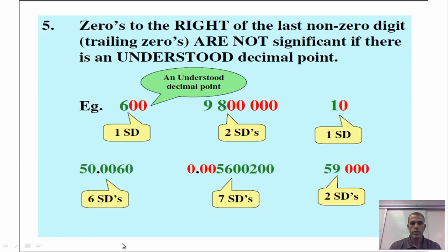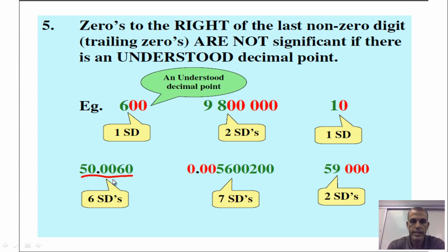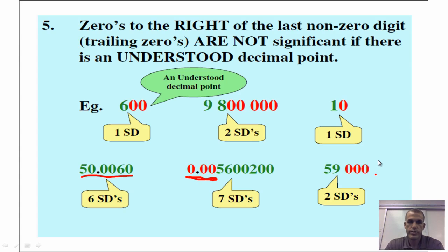Looking at the answers: the bottom examples are all significant due to the decimal points being in place. Some are not significant. For the one with the understood decimal point, those three zeros will not be significant, so we only have two digits that are significant in that particular example.